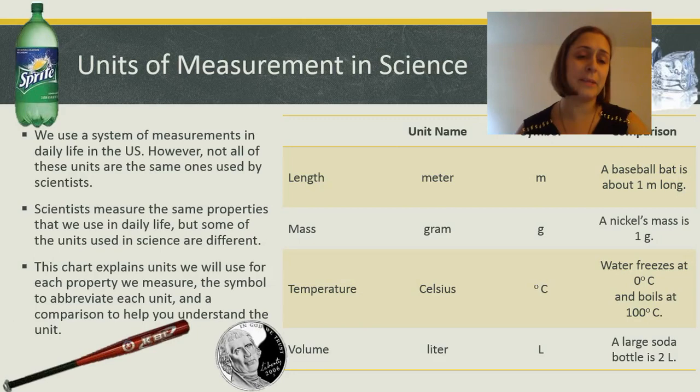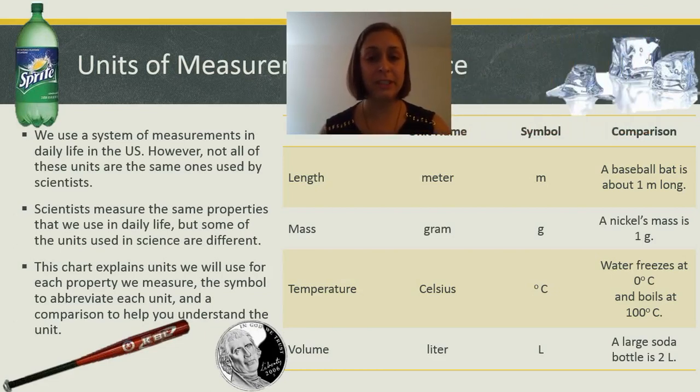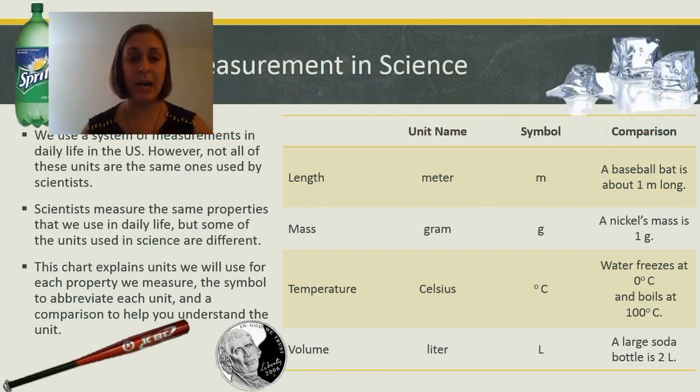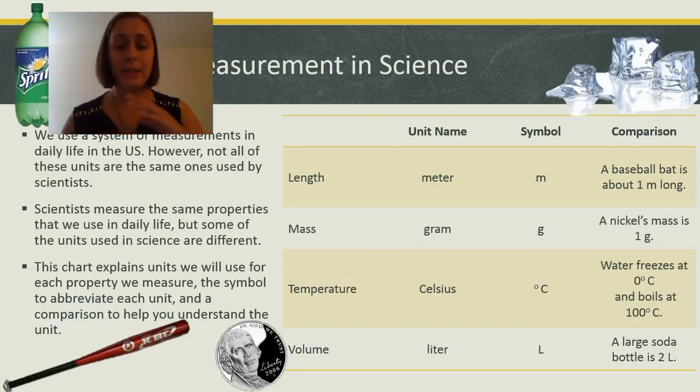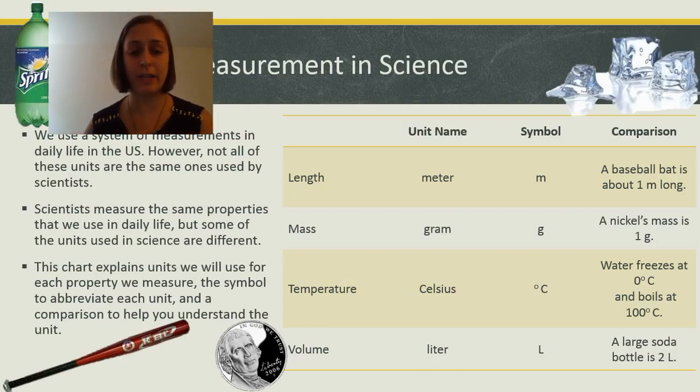So, scientists measure the exact same properties that we use in daily life, but sometimes they use different units. That's so that scientists all over the world can agree and use the same units and not run into any trouble trying to understand how many miles something is in a country where everyone uses kilometers. So, either way, all countries agree that scientists will use the same measurements, and those are the measurements that we'll look at as well.